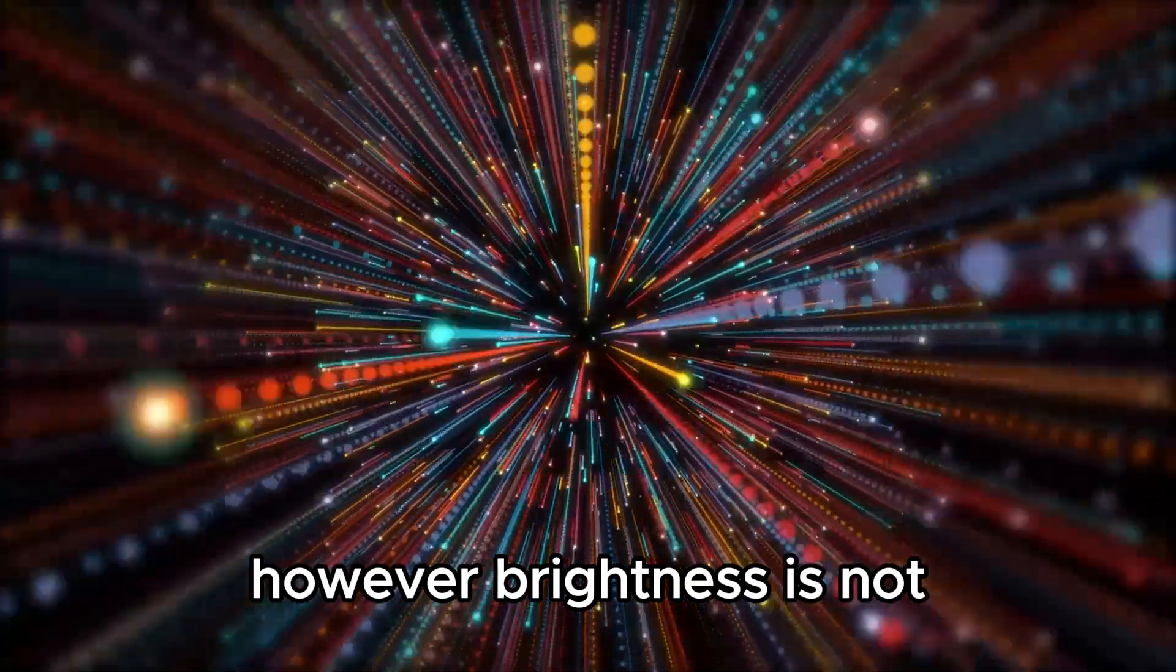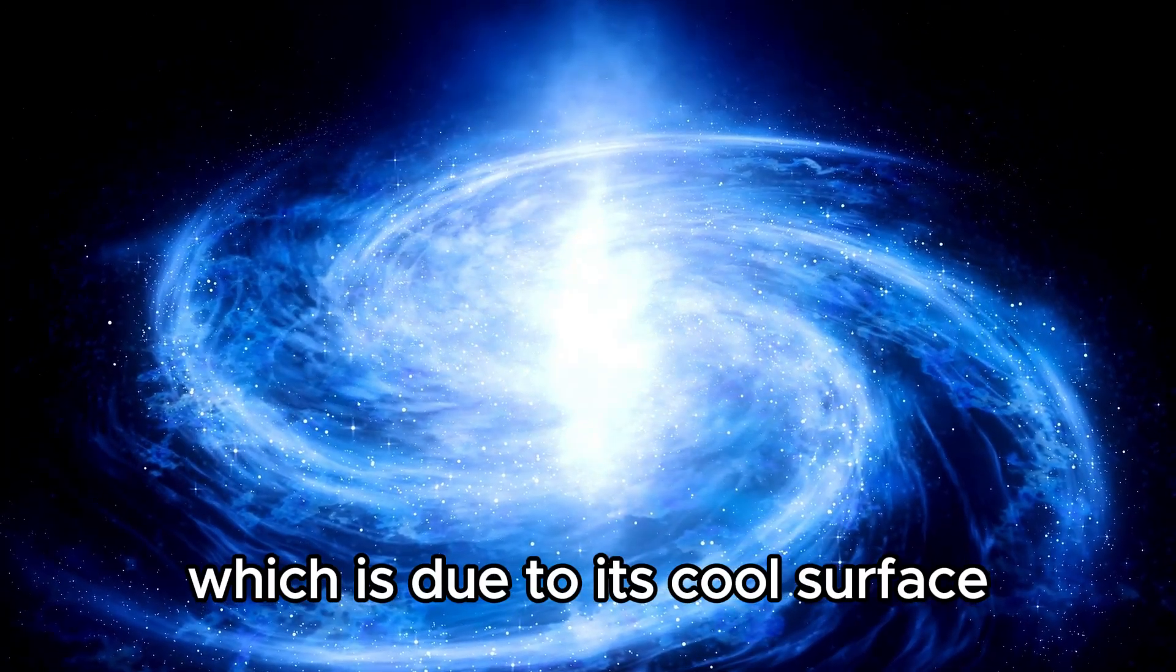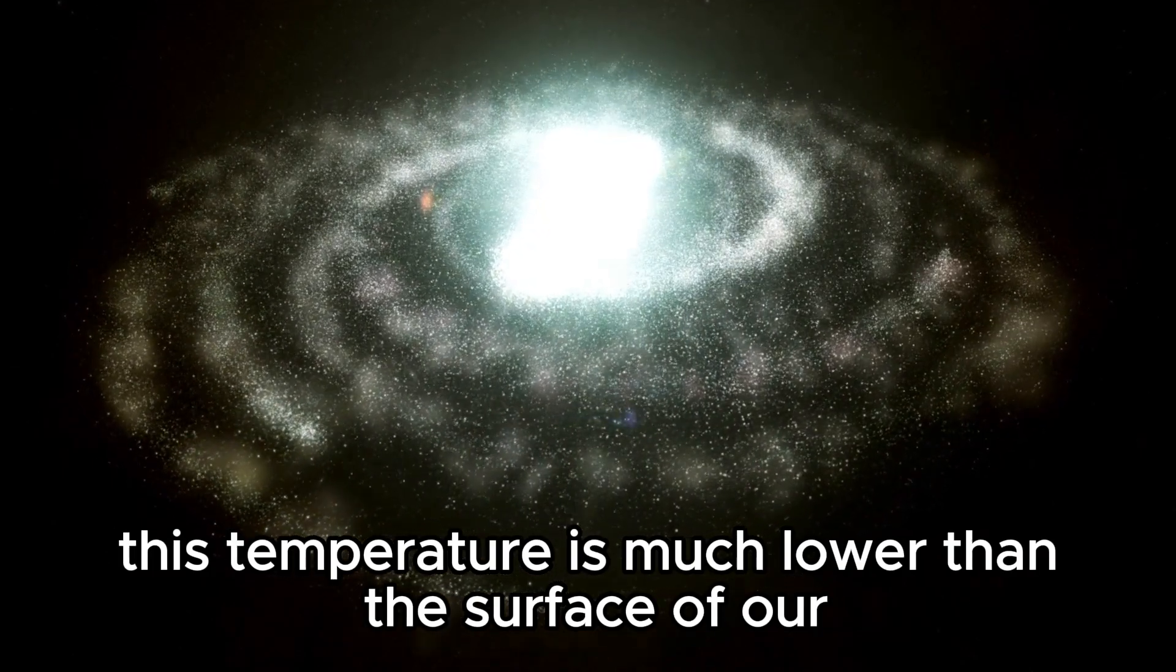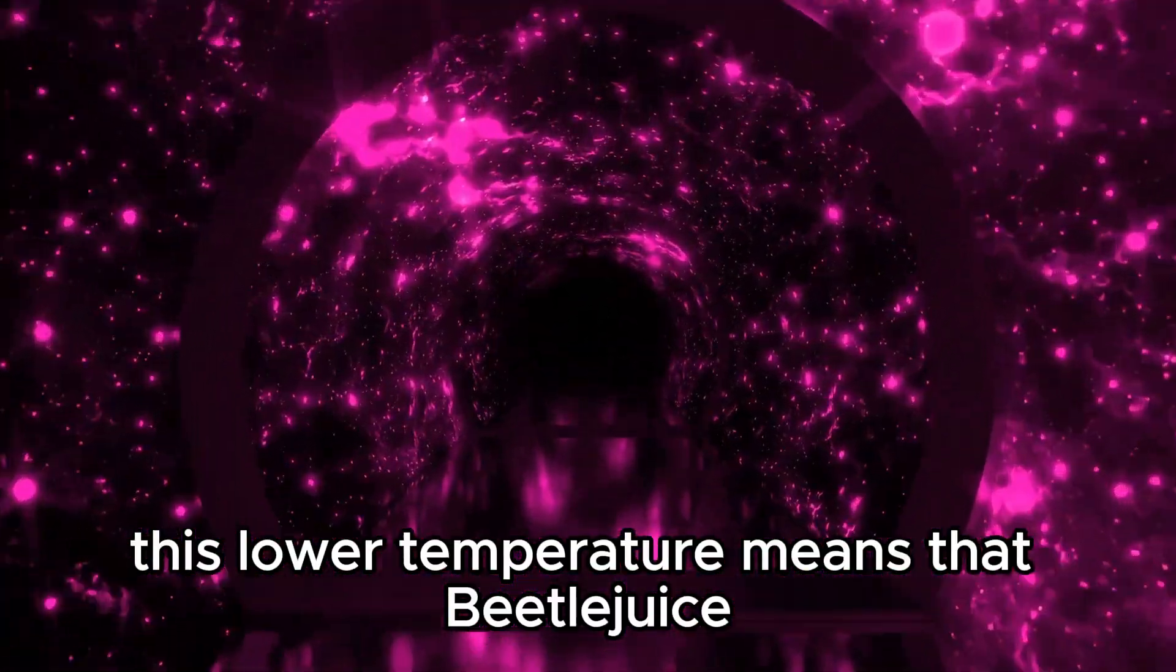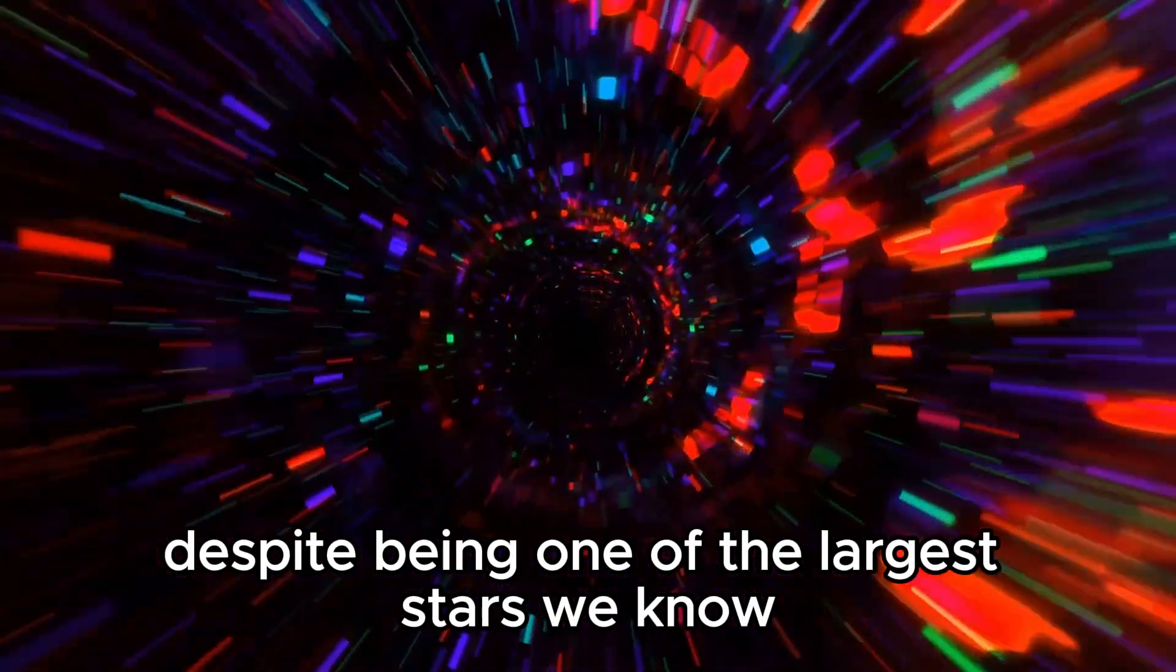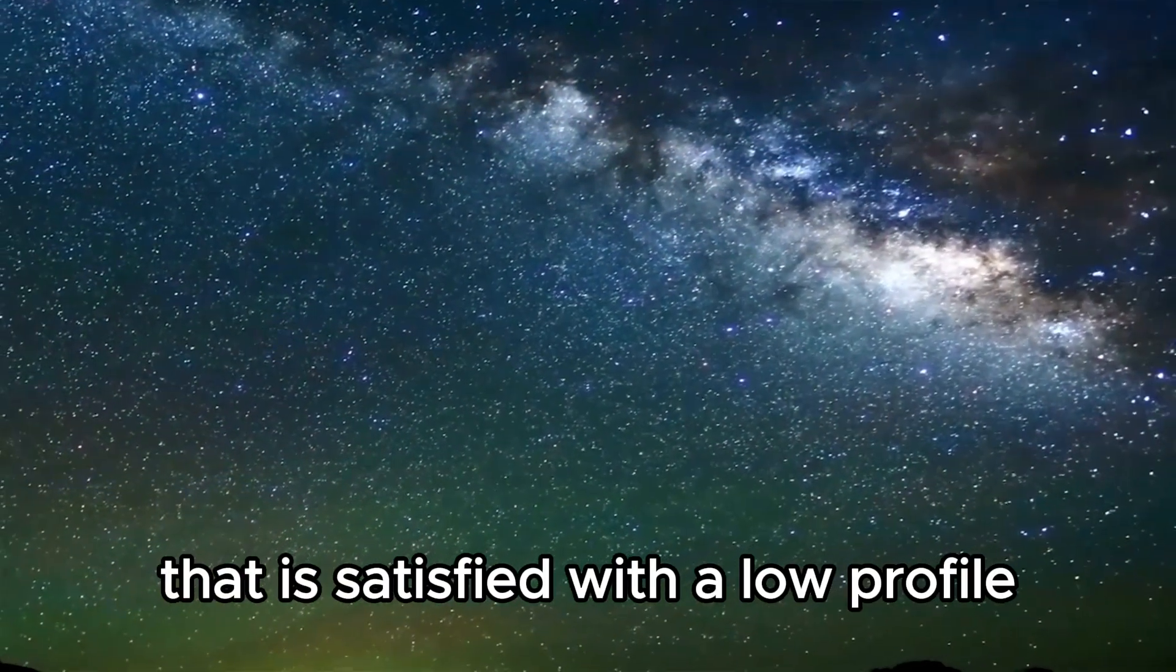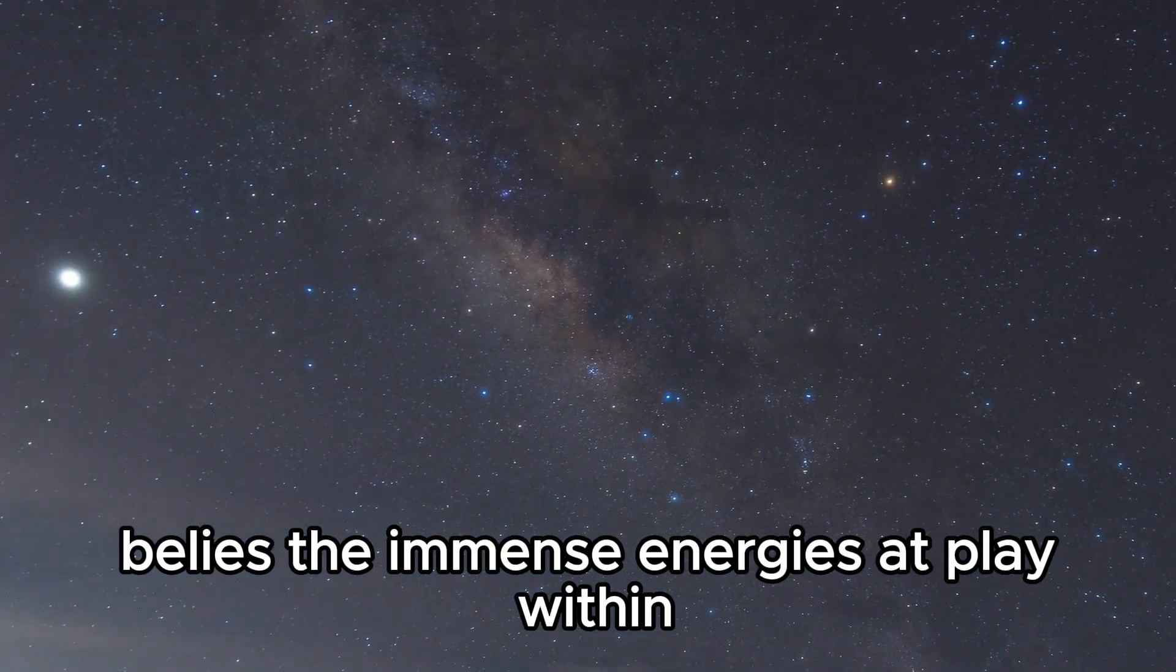However, brightness is not the only outstanding feature of the star. Betelgeuse is known for its distinctive reddish color, which is due to its cool surface with a temperature of about 3,500 Kelvin. This cooler temperature is a hallmark of red supergiants, contrasting sharply with hotter blue stars. This temperature is much lower than the surface of our sun, which reaches 5,500 Kelvin. This lower temperature means that Betelgeuse emits much less energy per unit area compared to the sun. That is why, despite being one of the largest stars we know, it appears much dimmer. The vast size of Betelgeuse, combined with its lower temperature, gives it its characteristic reddish hue. Betelgeuse is like that giant that is satisfied with a low profile and doesn't need to show off its size to feel important.